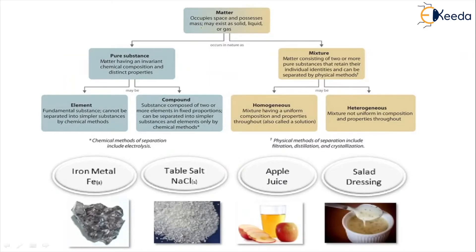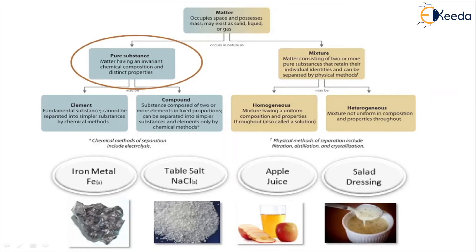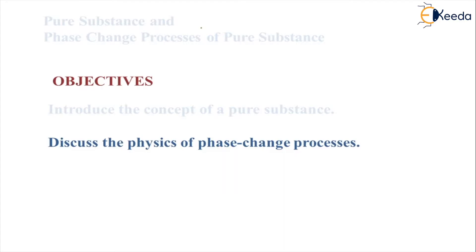Another way of classification: matter itself can be classified by various ways. Matter occupies space and possesses mass, and may exist as solid, liquid, or gas. In nature, matter occurs in two forms: pure substance and mixture. A pure substance has an invariant chemical composition and distinct properties. It may be an element — a fundamental substance that cannot be separated into simpler substances by chemical methods — or a compound composed of two or more elements in fixed proportion, separable only by chemical methods.